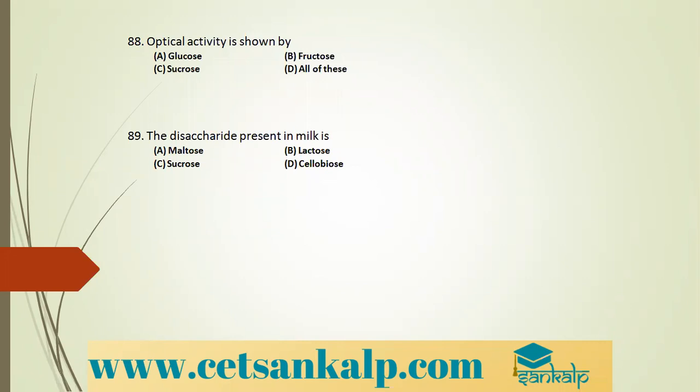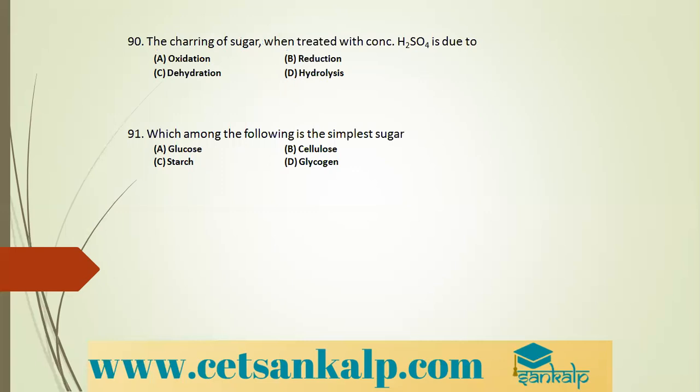Q: Optical activity is shown by which of the following? All carbohydrates — monosaccharides, oligosaccharides, and polysaccharides — are optically active. Glucose and fructose are monosaccharides; sucrose is a disaccharide. All of them are optically active. Correct option is D. Q: The disaccharide present in milk is lactose — a combination of glucose and galactose.